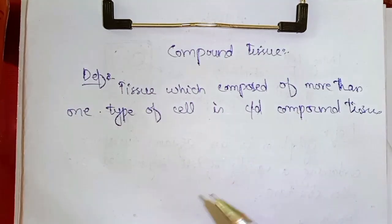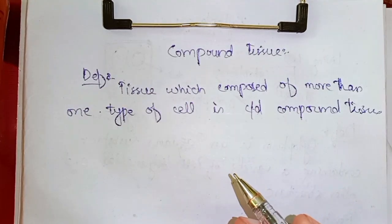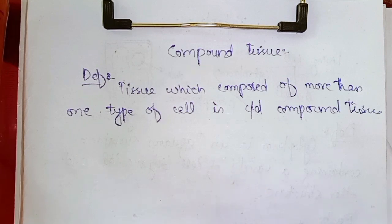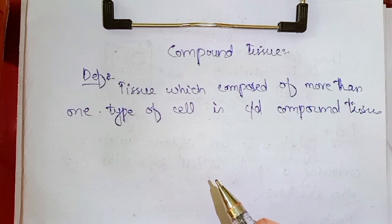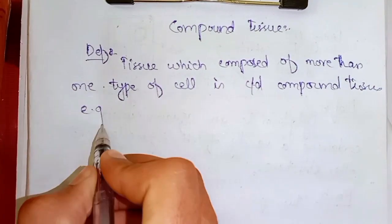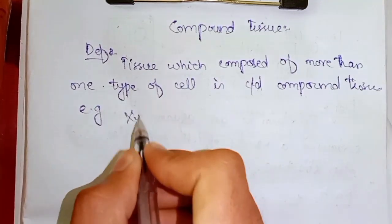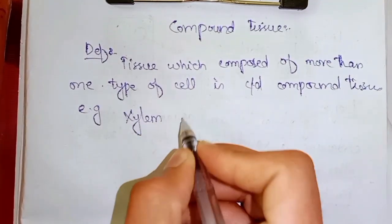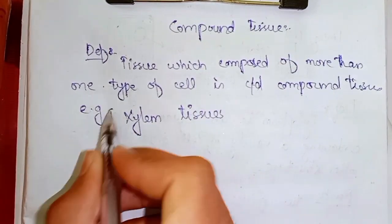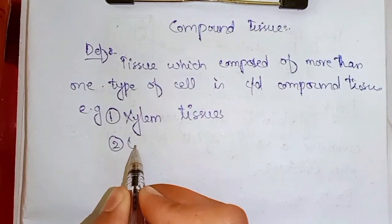So, more than one type of cell is called compound tissue. Xylem and phloem tissue found in the vascular bundle are examples of compound tissue. The main examples are xylem tissues and phloem tissues, which are compound.